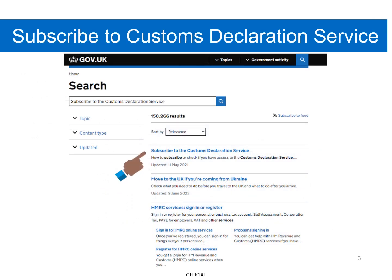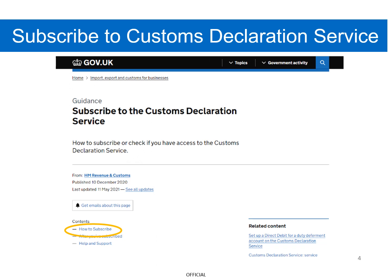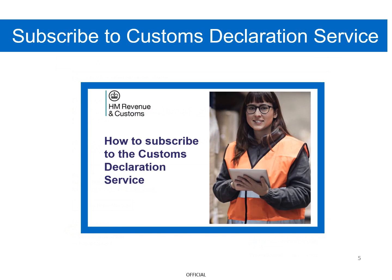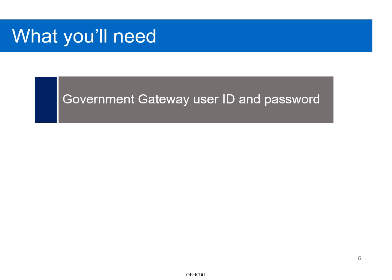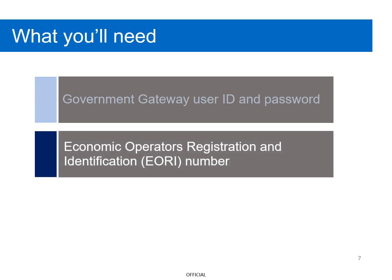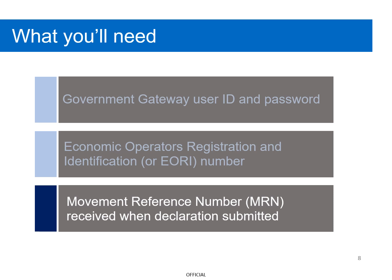Before you start, you'll need to subscribe to the Customs Declaration Service. If you haven't already, you can subscribe by following the easy step-by-step guidance on GOV.UK, or you can also watch our short video on how to subscribe to the Customs Declaration Service. You'll also need your Government Gateway User ID and Password, your Economic Operator's Registration and Identification number, and the Movement Reference Number, also known as the MRN, that you get when you submit a declaration.